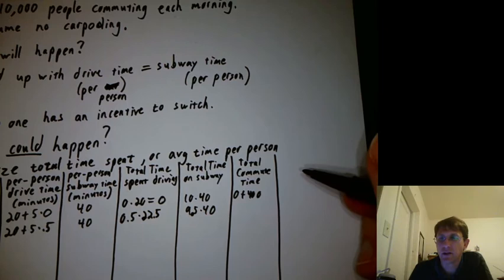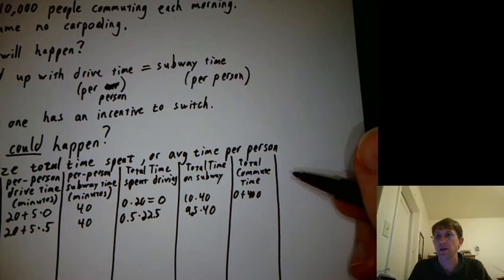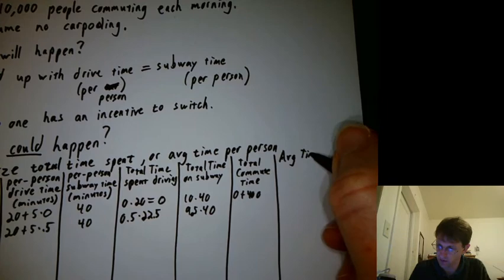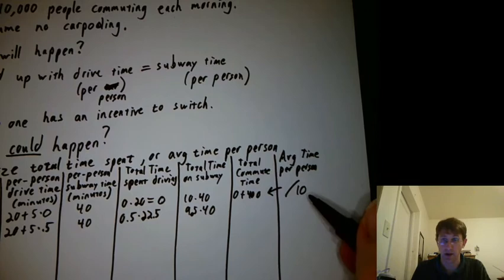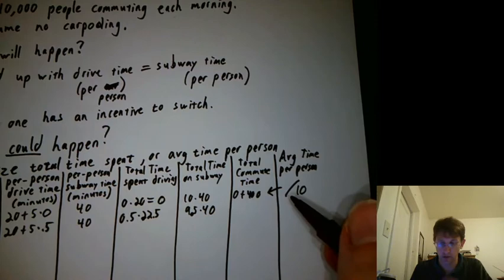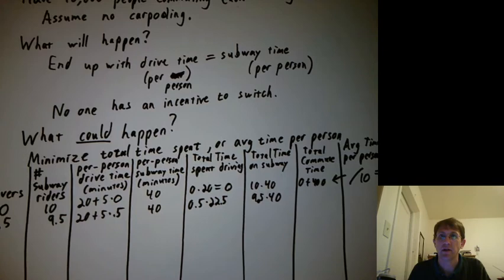It's kind of hard to think of total minutes spent. But if we break it down per person and say, what was the average time per commuter? It would be whatever that number is, divided by however many people we had, 10,000 in this case. And here we'd get 400 over 10, so 40. Not a surprise because everyone took exactly 40.